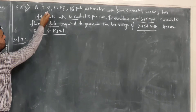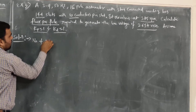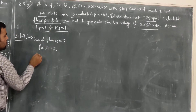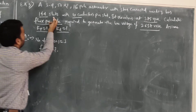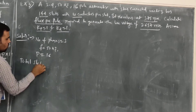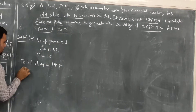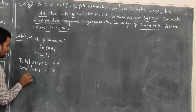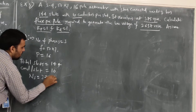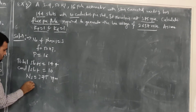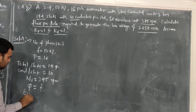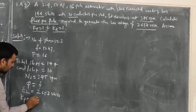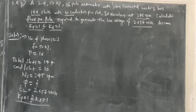Given data: 3-phase, so number of phases = 3; frequency = 50 Hz; 16-pole, so P = 16; 144 slots, so total number of slots = 144; 10 conductors per slot; speed N = 375 rpm; EL = 2657 volts; Kp = 1 and Kd = 1. Same procedure applies.